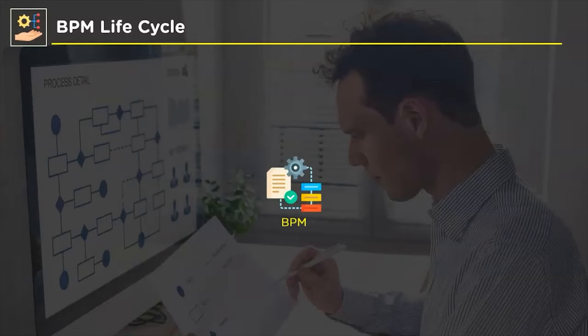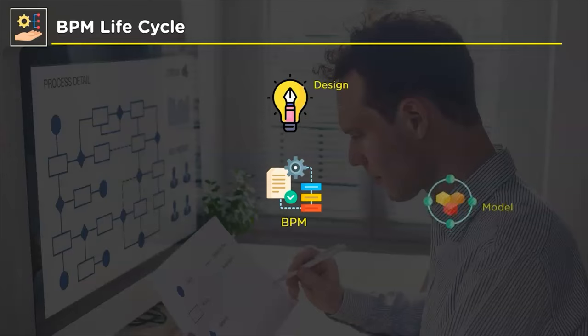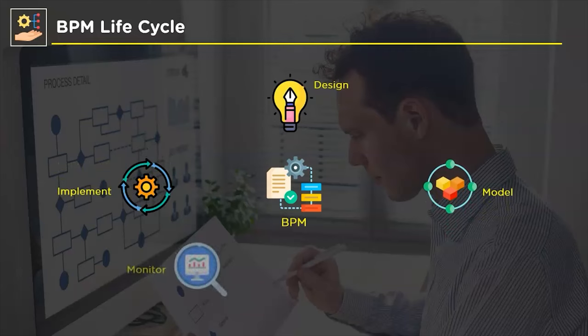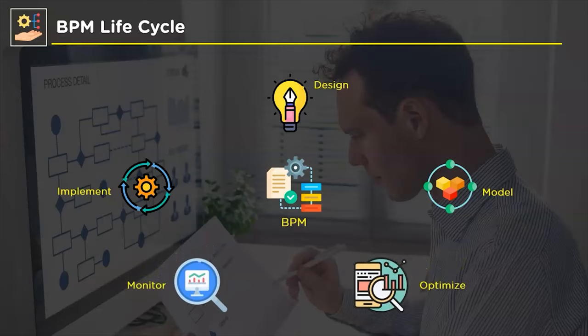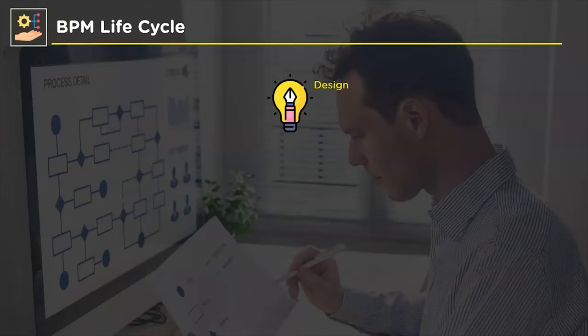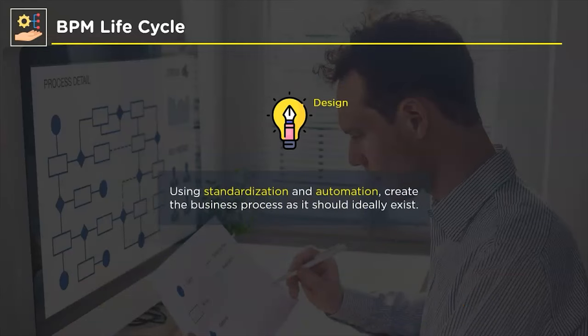The BPM lifecycle combines technology and management through five standard steps: design, model, implement, monitor, and optimize. A large team of IT and management experts is required to construct a BPM project. The management team studies related business processes in great detail and then redesigns them with the objective of optimizing and making them more purpose-oriented. During the design phase, all processes are carefully designed to be as straightforward as possible using standardization and IT automation, allowing this phase to be completed in a shorter period of time.